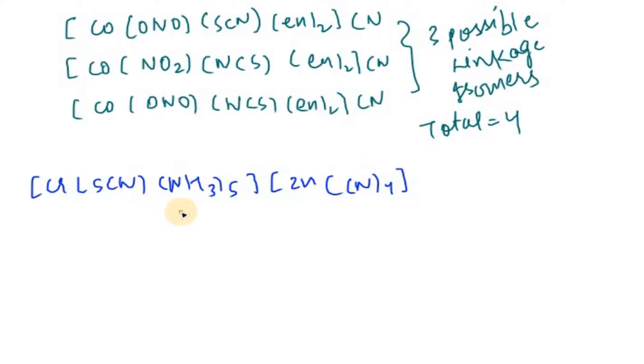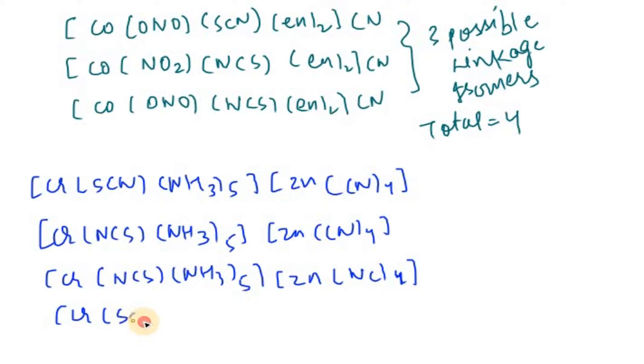Here with CN and NC, the possible linkage is chromium SCN which could be replaced as NCS, ammonia 5, then zinc CN4. If we take one more example: chromium NCS, ammonia 5, then zinc NC4 where the portion is NC. Also if it's SCN, chromium SCN, then ammonia 5, then zinc NC4.